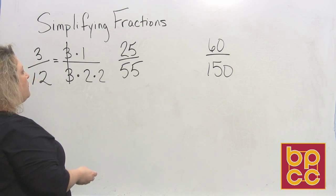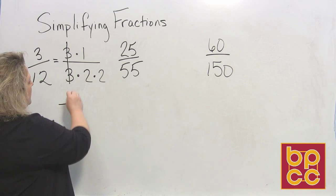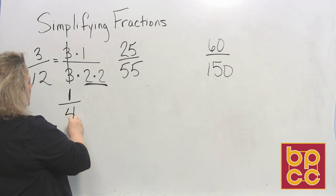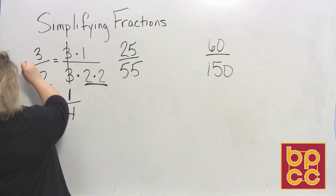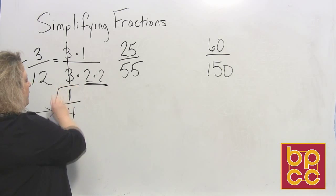And then what's left over at the top is a 1. What's left over in the denominator is 2 times 2, which makes 4. So 3 over 12 reduces to the fraction 1 fourth.